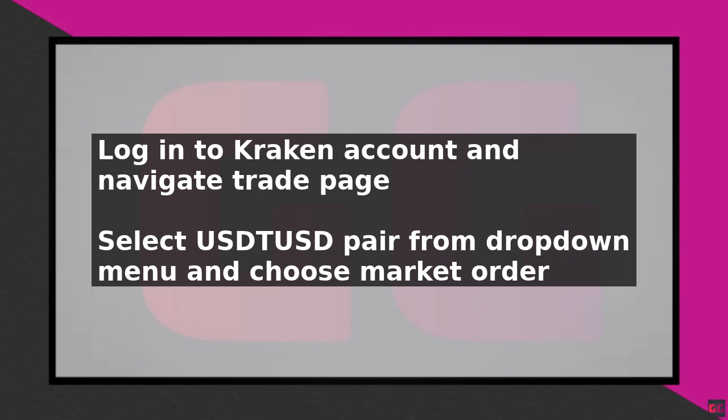Click on the New Order tab and select the USDT/USD pair from the drop-down menu. Next, choose the market order option, which allows you to buy or sell USDT at the current market price.